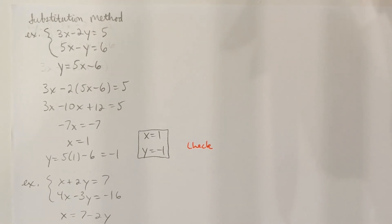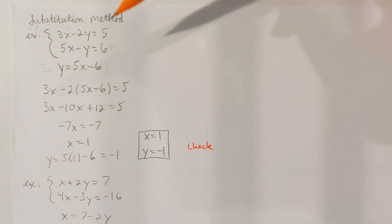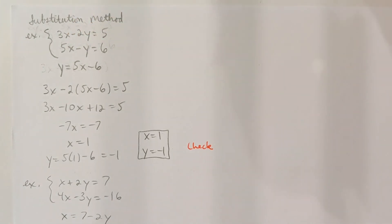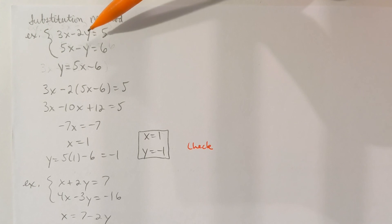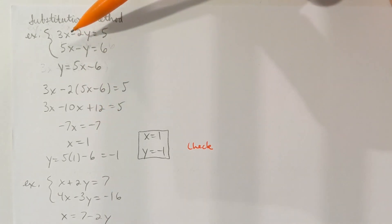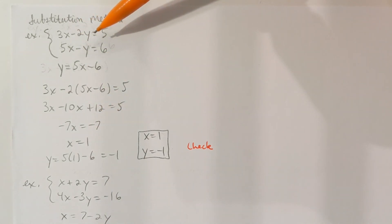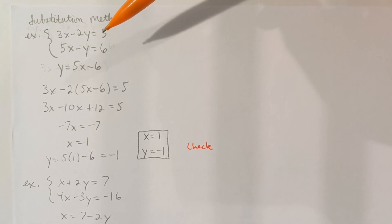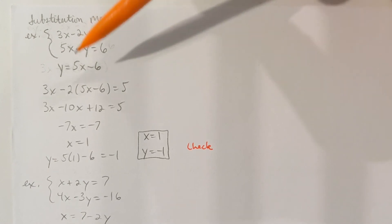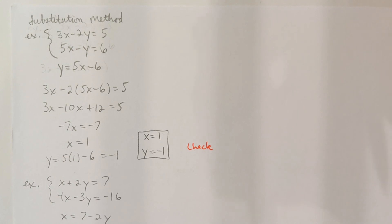It doesn't matter what equation and what variable you want to solve for. I could have selected the top equation and solved for x — I would have still gotten the same answers, but I would have found y first, and I would have introduced fractions early on in the calculation. That doesn't sound fun. So the point is to look for a variable where you have either a 1 or a negative 1 in front — with the substitution method, you want to solve for that variable to start.